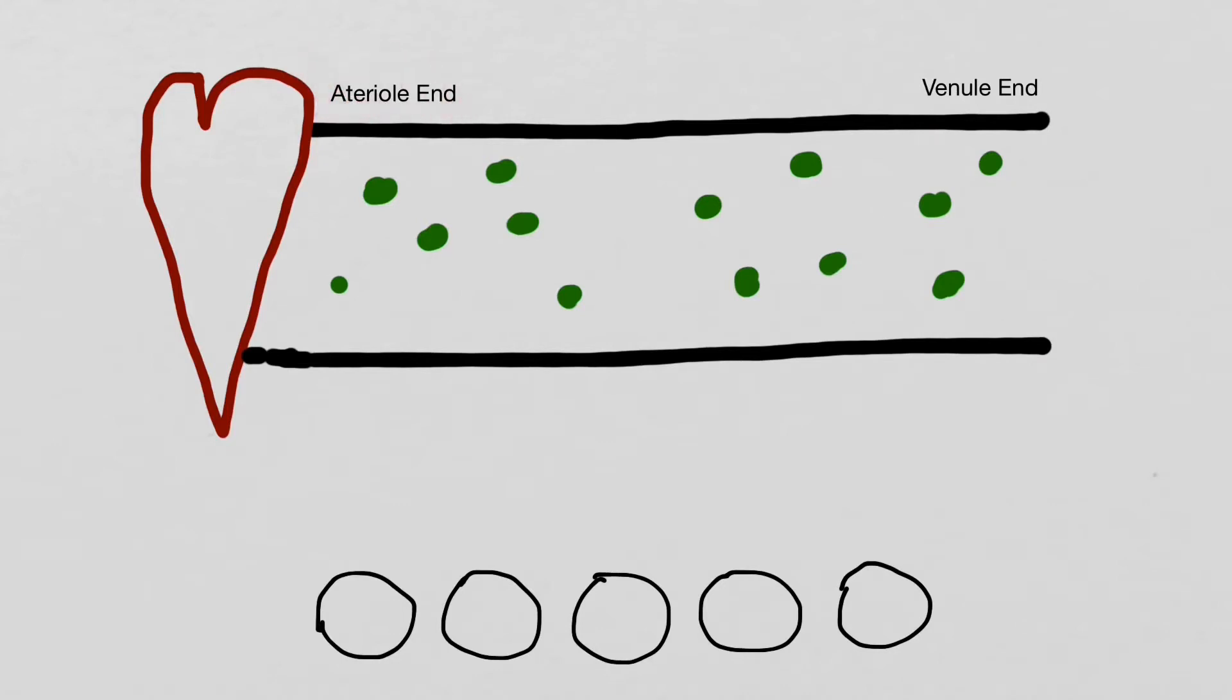So we have the arterial end of the capillary, which is closest to the heart, and then we have the venule end, which is further away.